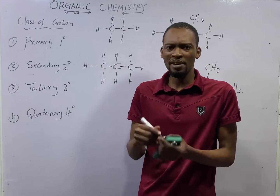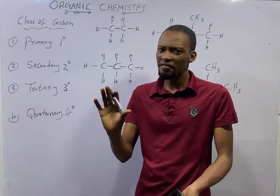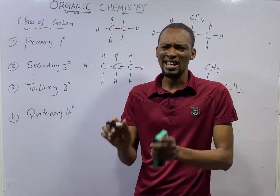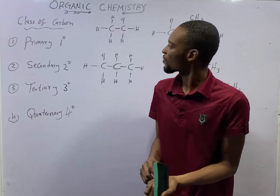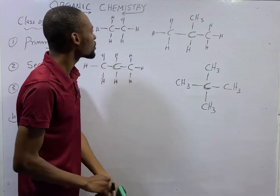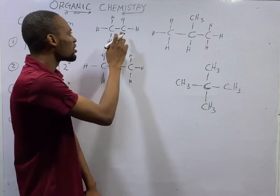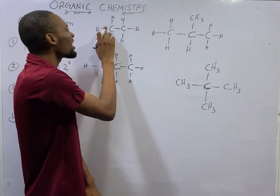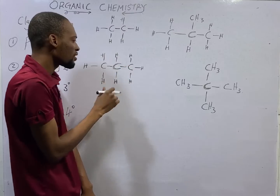Primary carbon is simply any carbon that does not have any other carbon attached to it, or that has a maximum of one carbon atom attached to it. In this compound, you can see that this carbon has only one other carbon attached to it — this is a primary carbon. Similarly, this carbon also has just one other carbon attached to it, making it a primary carbon.